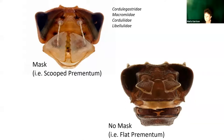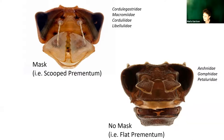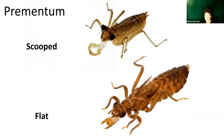We find the flat pre-mentum in the Aeshnids or darners, the Gomphids or club tails, and the Petalurids or petal tails — although if you spoke to Chris Beatty, he might tell you that the flat pre-mentum is a little different in a petal tail, as there's been some evolution acting on that.